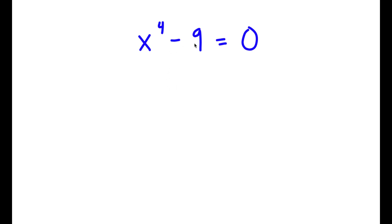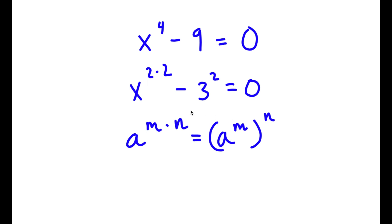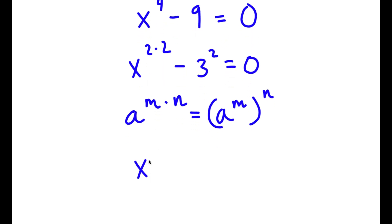The third problem: x to the power of 4 minus 9 equals 0. To solve this, I rewrite x to the power of 4 as x to the power of 2 times 2, and 9 as 3 squared. Using the rule that a to the power of m times n equals a to the power of m to the power of n, I rewrite x to the power of 2 times 2 as (x squared) to the power of 2.